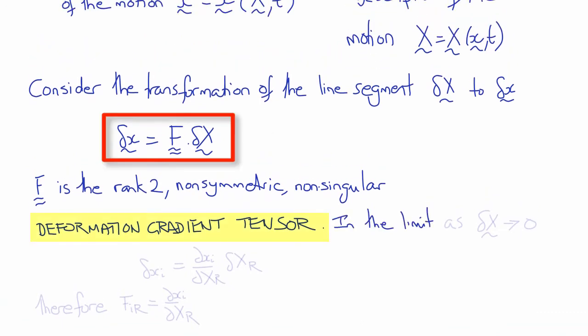In the limit, as delta big X tends to zero, we can use the chain rule to relate the components of delta little xi to delta big Xr by the partial derivative del xi del Xr. Therefore, the components of the deformation gradient tensor, F_ir, are the partial derivatives of the deformed or current coordinates del little xi with respect to the undeformed or reference coordinates del big Xr.